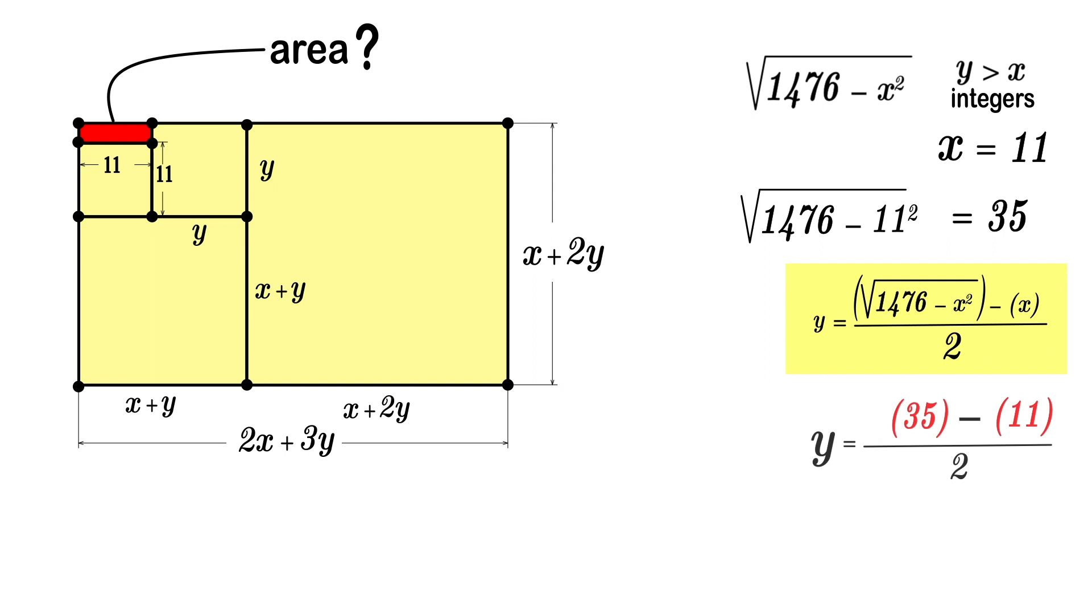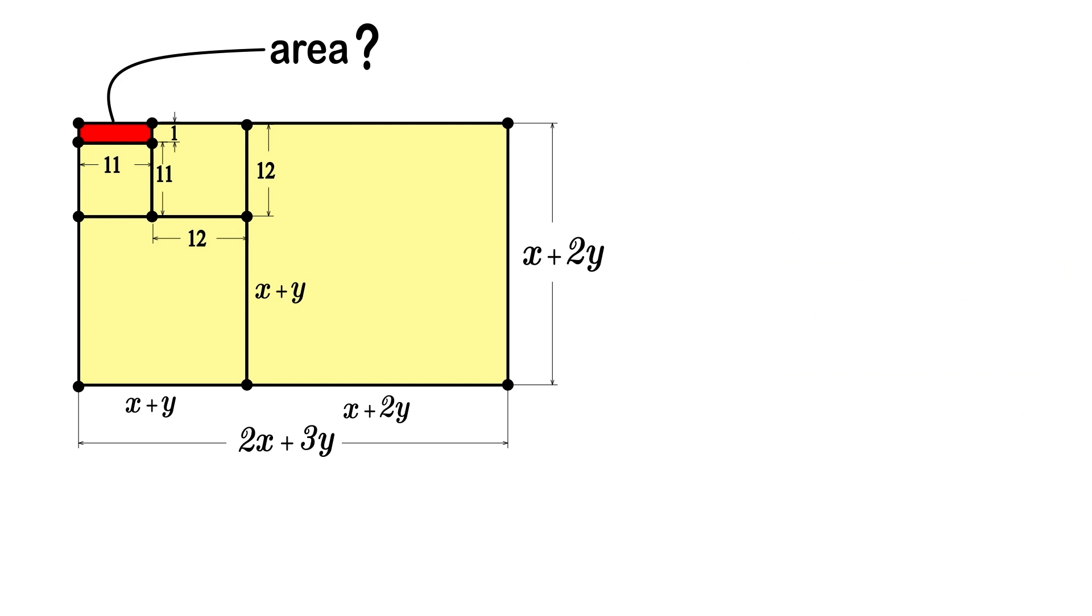Now the easiest part. In order to calculate the area of the red rectangle, all that is left for us to do is to find out the lengths of its sides and multiply them together. The result will be 11 times 12, which equals 132.